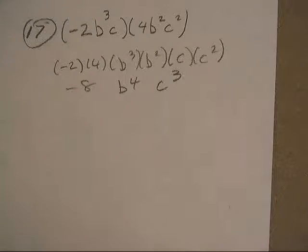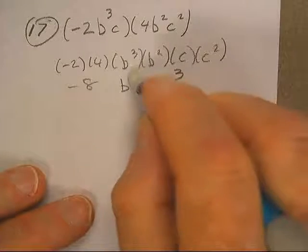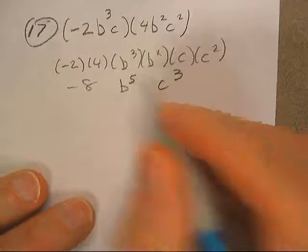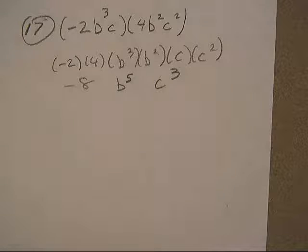And I'm done. Except I can't add. 3 plus 2 is 5. Let's change that to 5 right there. It's better. Negative 5, b to the 5th, c cubed.